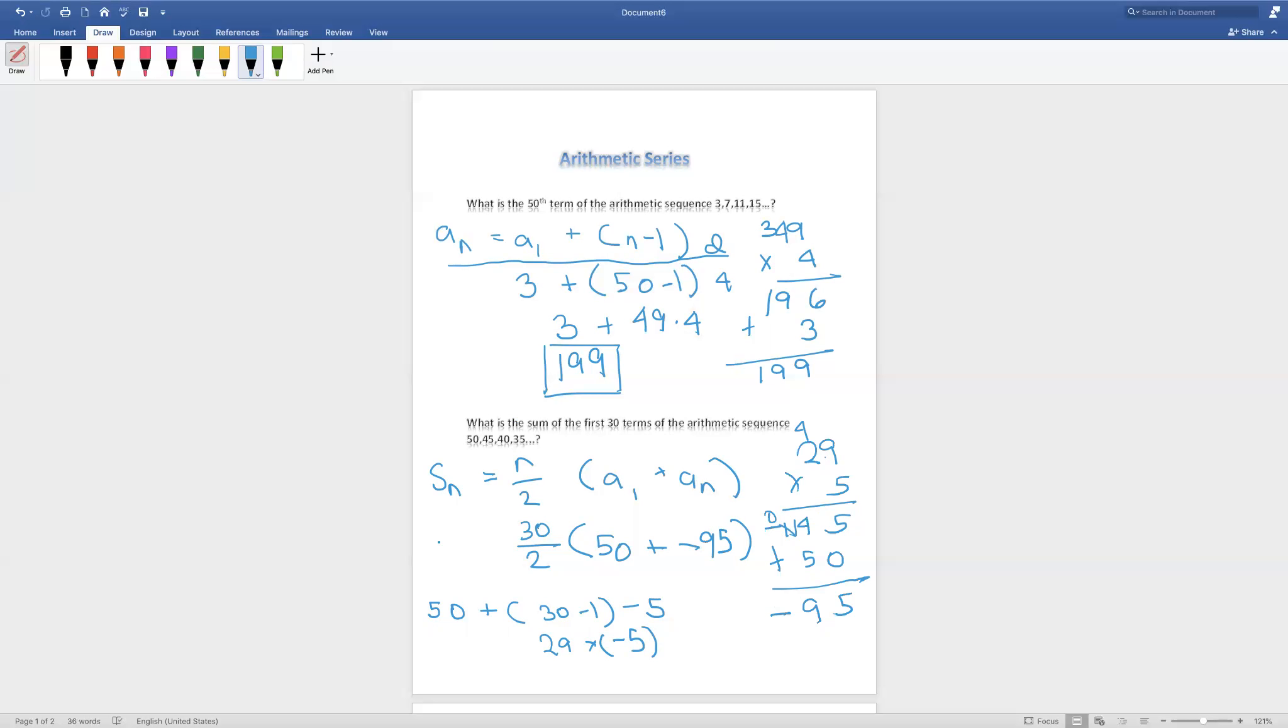Now, I'm just going to erase some of this work so we have space to calculate. What we got before, we're just going to insert it here. Do you guys remember? It was negative 95. I'm just going to put parentheses inside this so we know it's not a plus and a minus at the same time. Now we're going to do 50 plus negative 95, which we get negative 45.